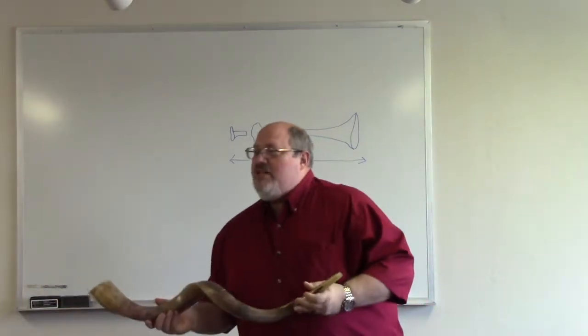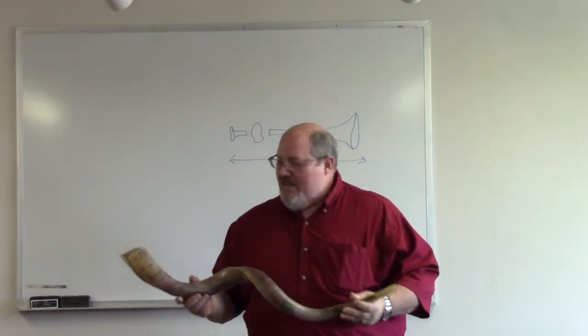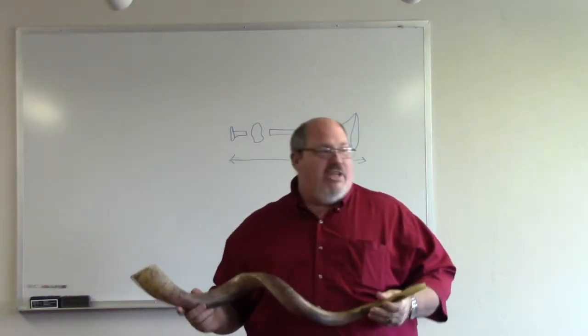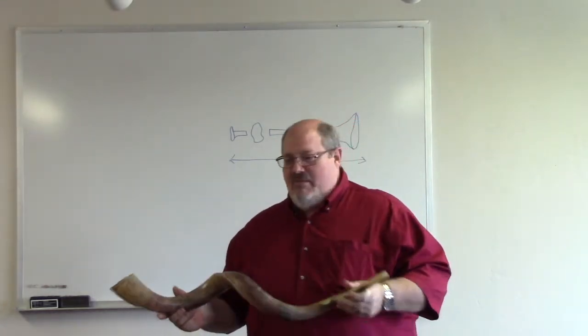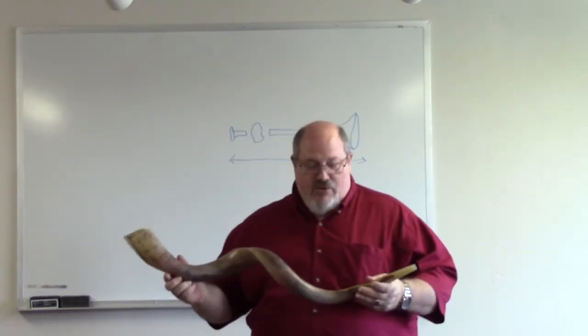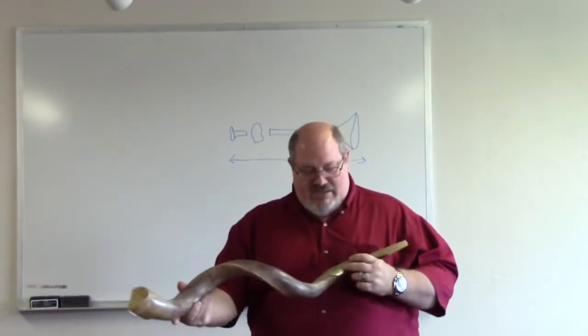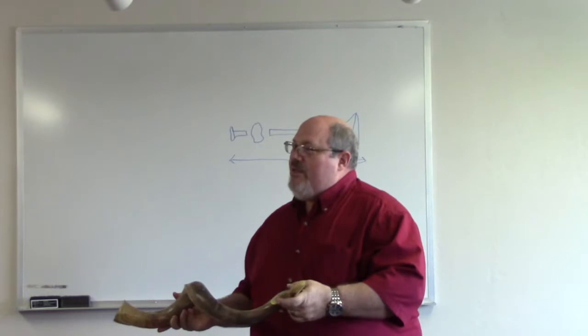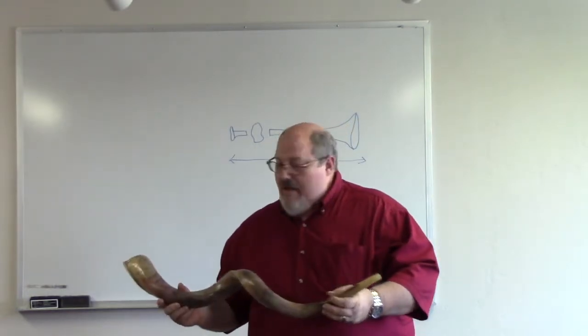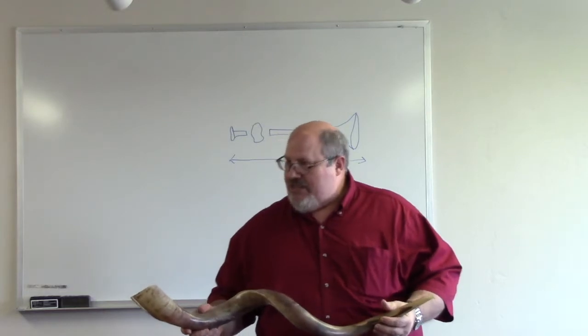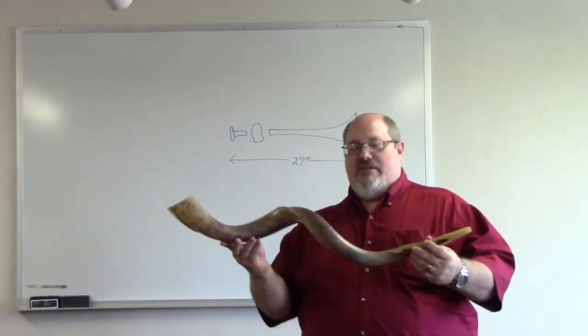So this shofar is a Yemenite shofar. It's different than a ram's horn. A ram's horn comes from a male sheep, a ram. This is from a kudu, an animal called a kudu. You can see it's got Hebrew script here. My father-in-law brought it back from Israel for me. So when the seven angels mentioned in Revelation are each given a horn, there's seven shofars, and this is a shofar.